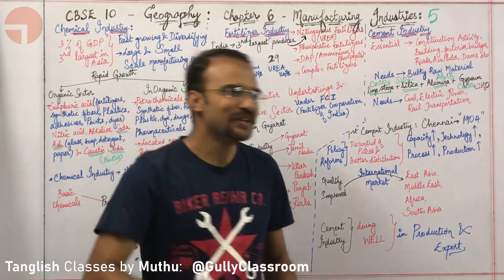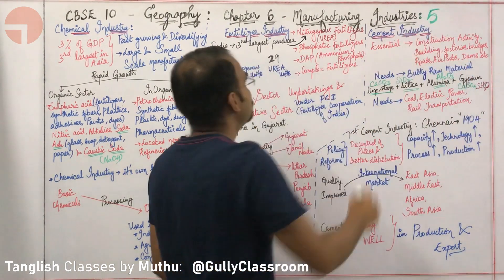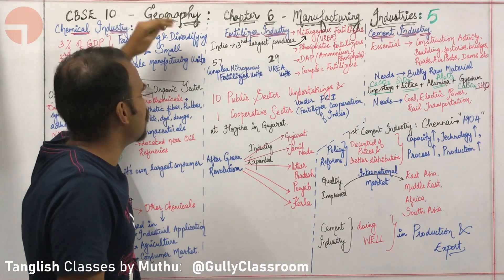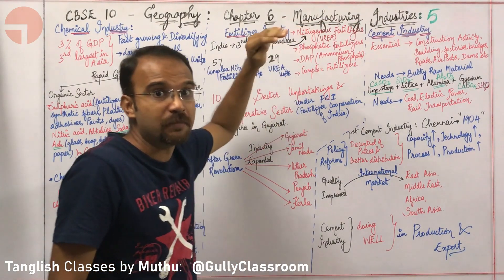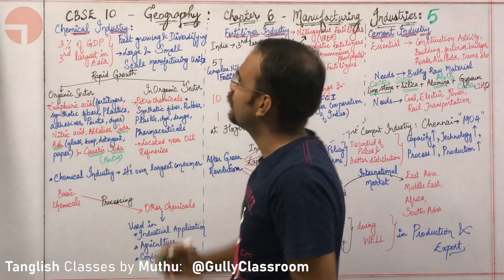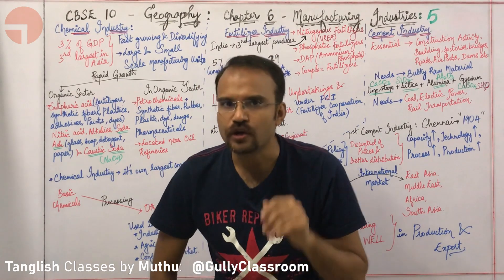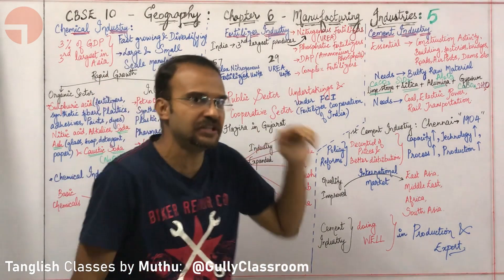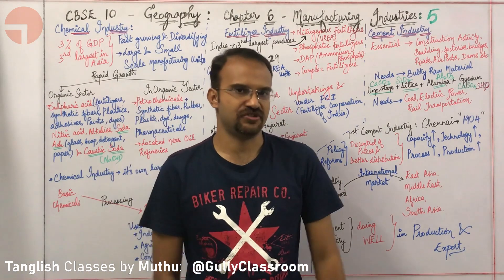Welcome to Gully Classroom. This is our 5th lecture in the unit Manufacturing Industries, CBSE 10th Standard Geography Chapter 6 — Manufacturing Industries. In this 5th lecture, we are going to study about 3 industries: Chemical Industries, Fertilizer Industries, and Cement Industries.